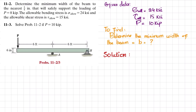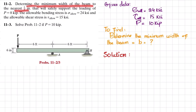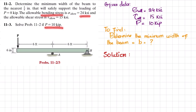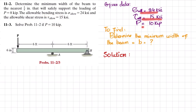Welcome back. Problem 11-3. The statement is: solve problem 11-2 if P is 10 kips. The statement of 11-2 is: determine the width of the beam to the nearest 1/4 inch that will simply support the loading, where P is 10 kips, allowable bending stress is 24 ksi, and allowable shearing stress is 15 ksi. The given data is written here, and we have to find the minimum width of the beam.